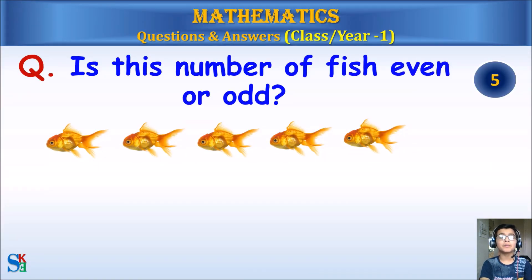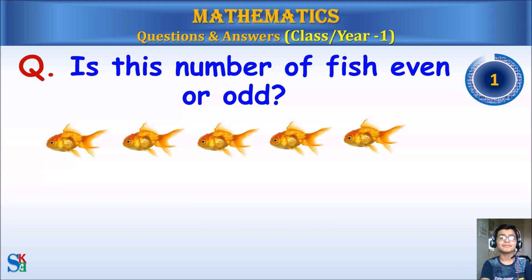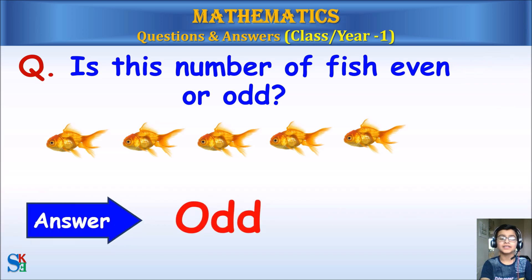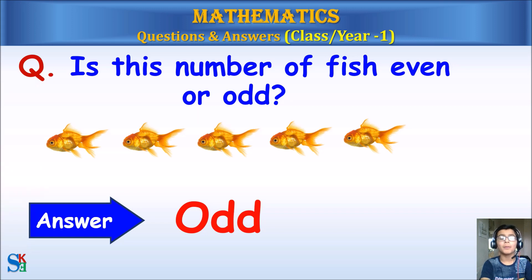Is this number of fish even or odd? Answer: Odd. 1, 2, 3, 4, 5 — 5 is an odd number.